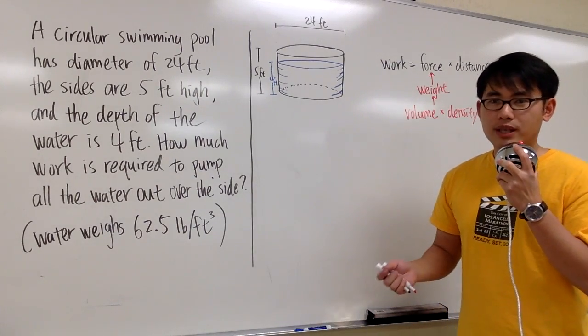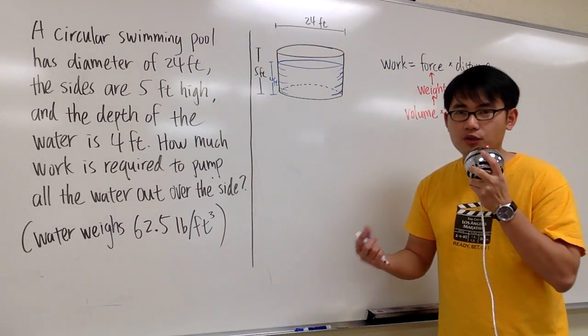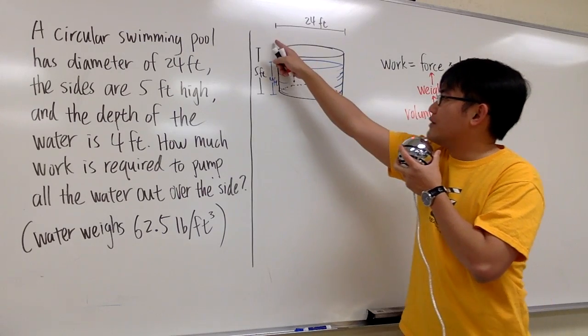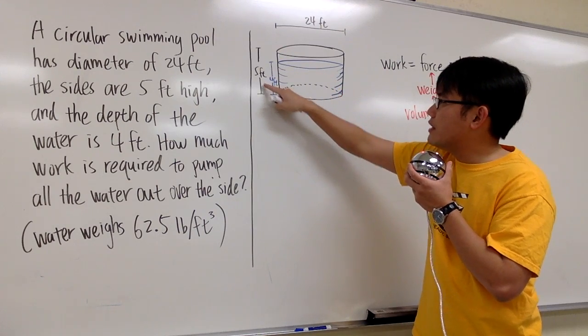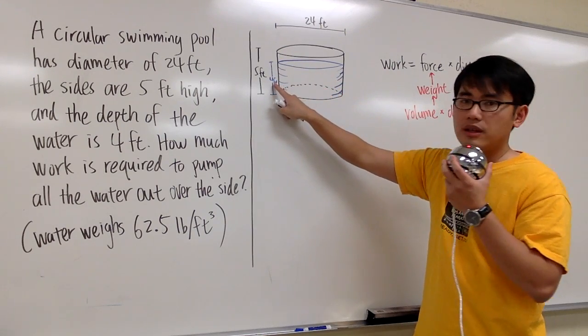In this question, we are going to calculate the work that we need in order to pump up water from a swimming pool. Here we have a circular swimming pool, and the diameter is 24 feet, and then the height of the swimming pool is 5 feet, the water level right here is 4 feet.